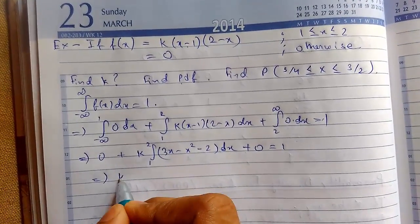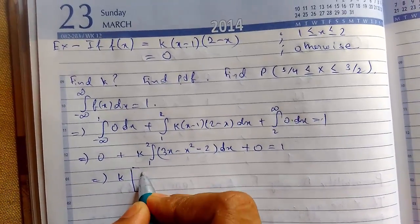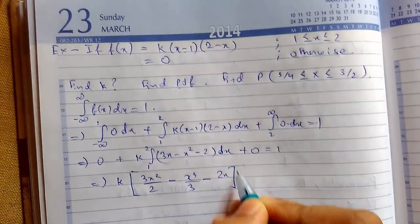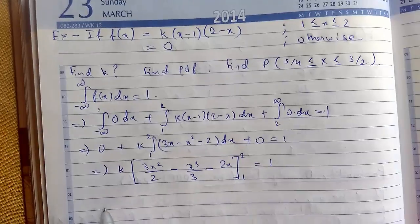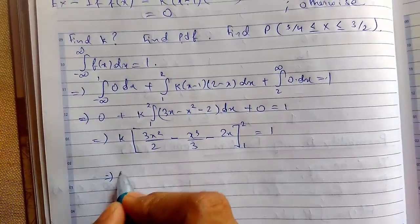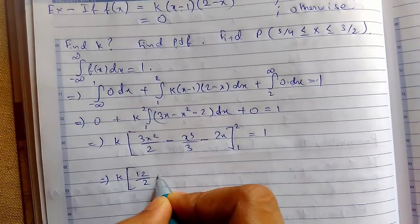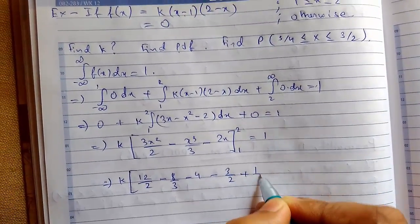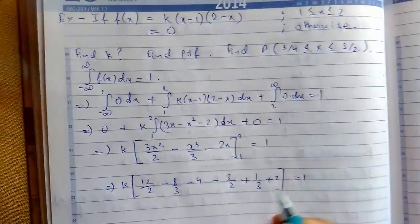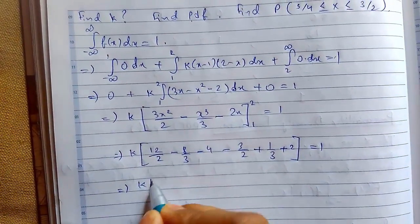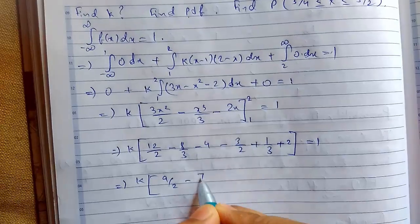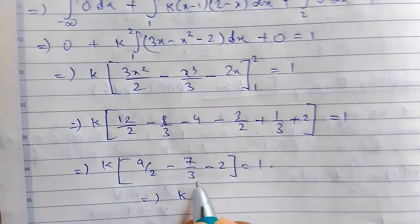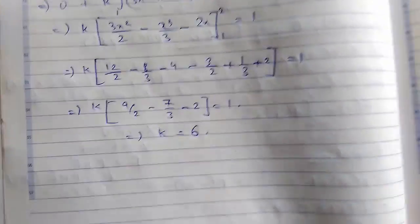So I will just put the values here. Integration. I hope everybody knows integration. So putting the values. This will be twelve by two minus eight by three minus eight by three minus eight. So solving this k turns out to be six. So this is the value of k.